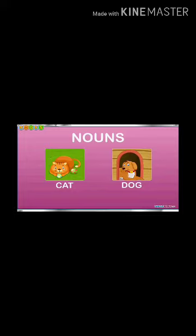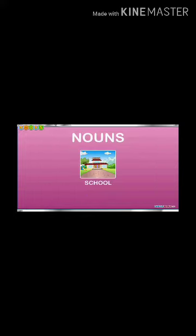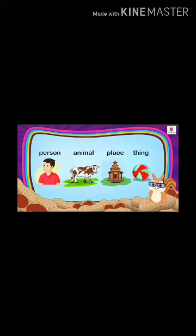We talked about person, now animals. Cat and dog — these are also naming words, the name of animals. Now we'll talk about place. It's a school, so school here is a naming word and the name of a place is also called a noun. So what we have studied is that the name of a person, animal, place and a thing is called a noun — also called naming words.